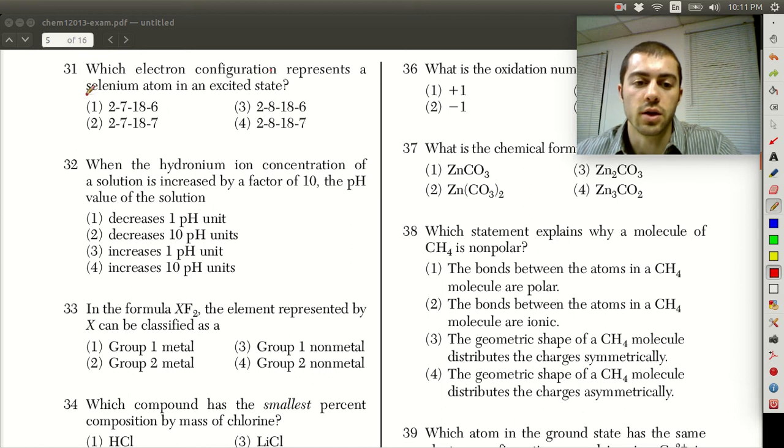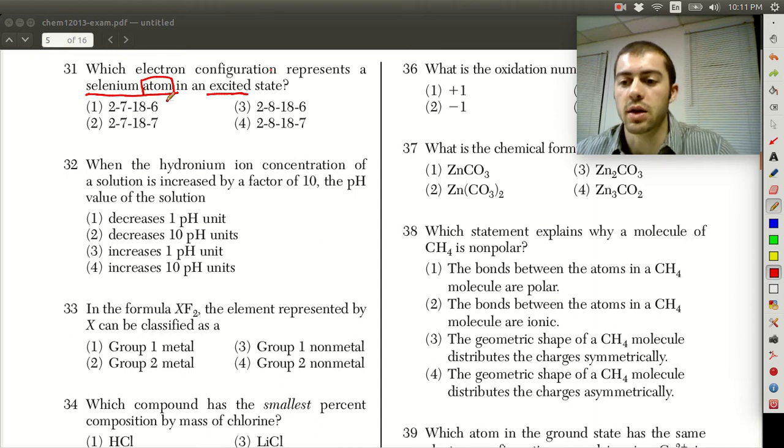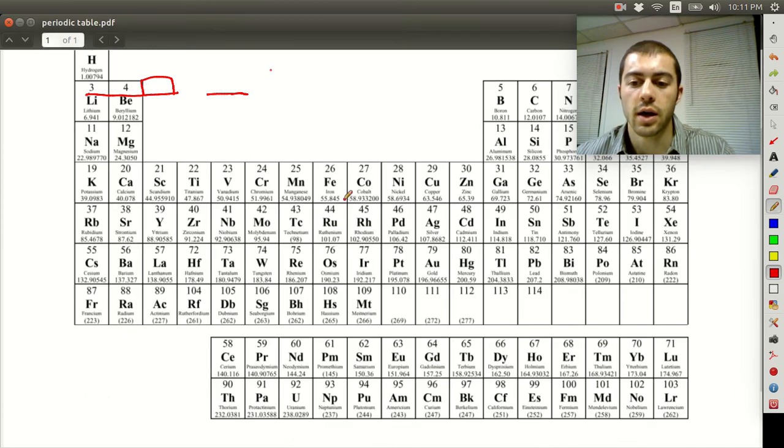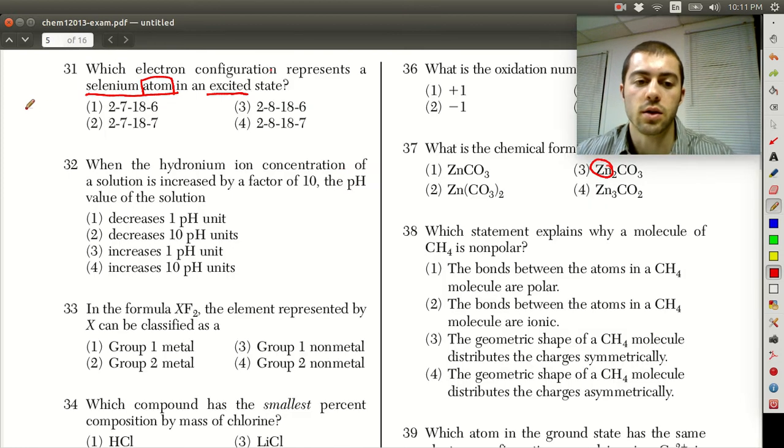which electron configuration represents a selenium atom in the excited state? The first thing that's important to know is this is a selenium atom, not ion, meaning it must be neutral. We can look at the periodic table and see selenium is atomic number 34, so that tells us there must be 34 electrons.